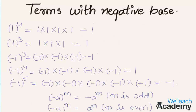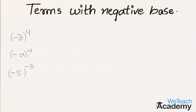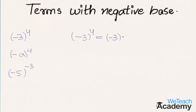Now let us look at some more examples. The first example is minus 3 raised to the power 4. We can write this as minus 3 multiplied by itself 4 times. As the power is an even number, minus changes to plus, and we get the result 81.